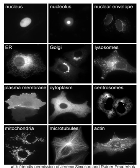In cell biology, the cytoplasm is all of the material within a cell, enclosed by the cell membrane, except for the cell nucleus. The material inside the nucleus and contained within the nuclear membrane is termed the nucleoplasm. The main components of the cytoplasm are cytosol, a gel-like substance, the organelles, the cell's internal substructures, and various cytoplasmic inclusions.